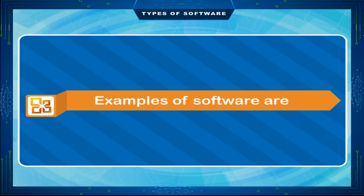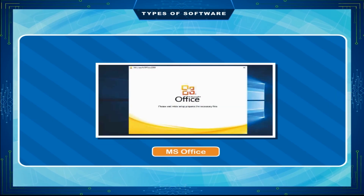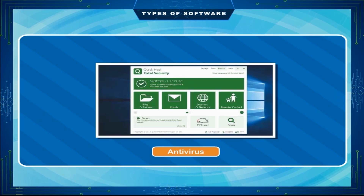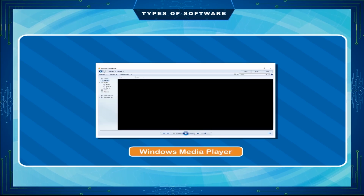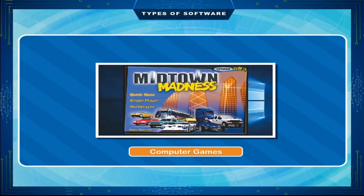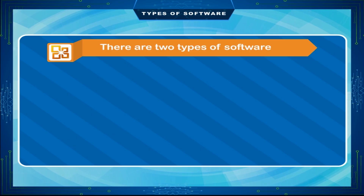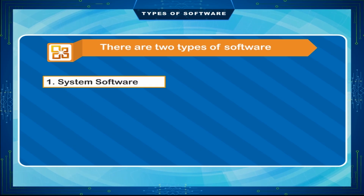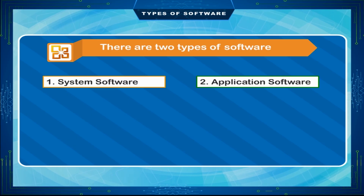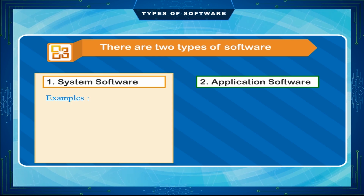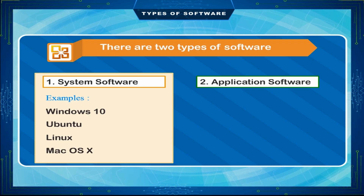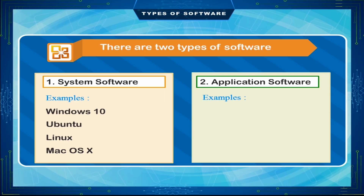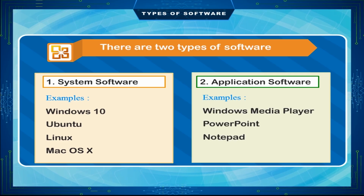Examples of software are MS Office, Antivirus, Windows Media Player, and Computer Games. There are two types of software: System Software and Application Software. System software examples include Windows 10, Ubuntu Linux, and Mac OS X. Application software examples include Windows Media Player, PowerPoint, Notepad, and Paint.